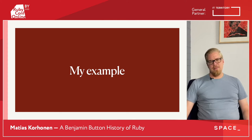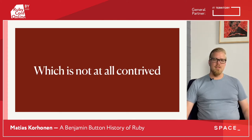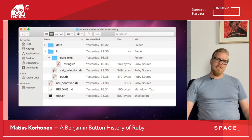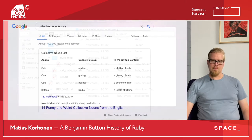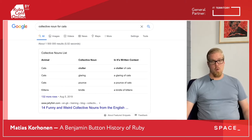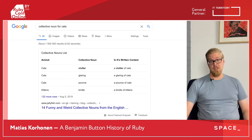Before we begin in earnest, let's take a brief look at my example application, which is not at all contrived and is 100% real-world code. This is an application for managing collections of cats — which the internet would have me believe is either a clutter, a glaring, or a pounce of cats, or possibly, if they're juvenile cats, a kindle of kittens.